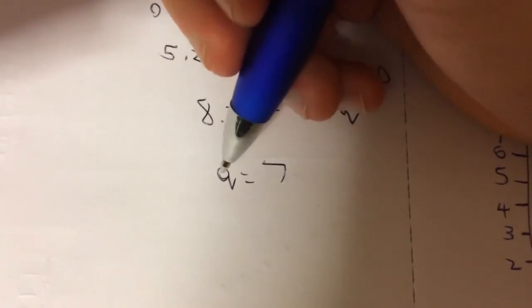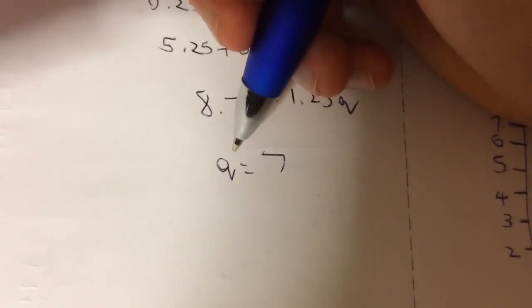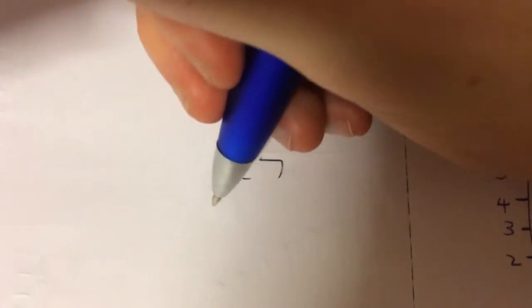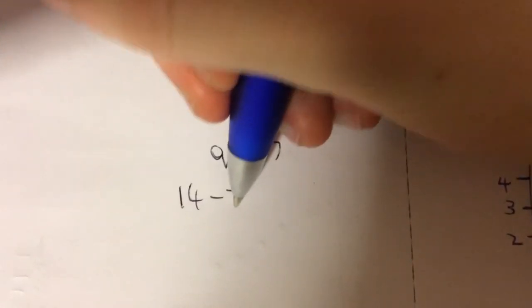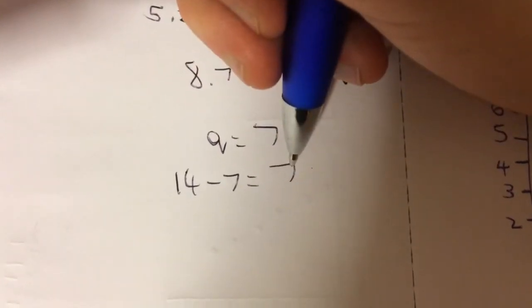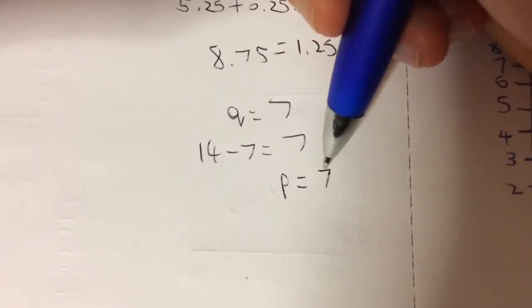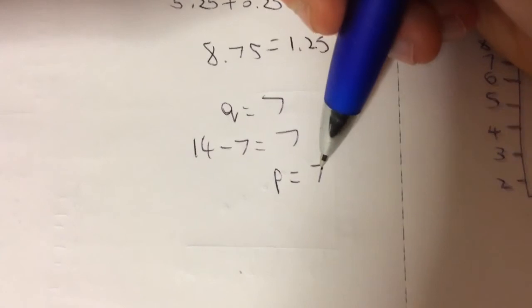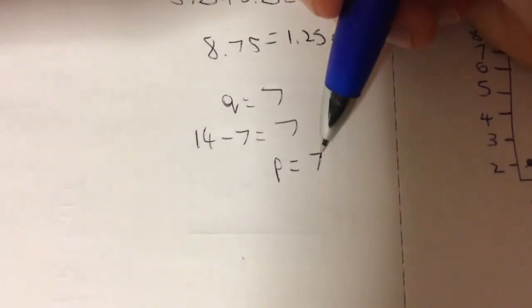And then we add that into the equation. 14 minus 7 equals 7. So 7 is the price that consumers will pay for the product.